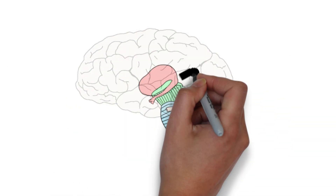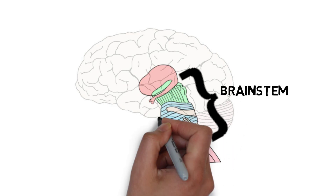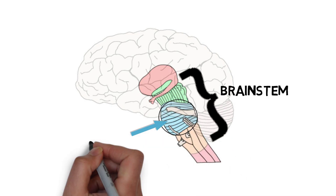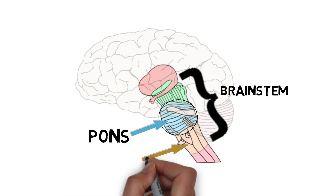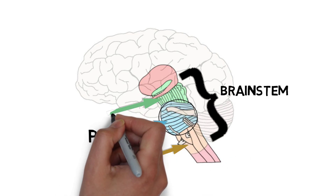The pons is a major division of the brain stem. It is found above the medulla and below the midbrain.